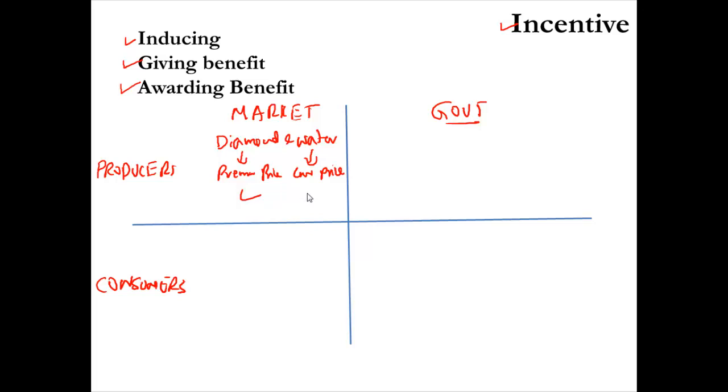The government interferes in this market incentive system by awarding subsidy for water suppliers, say for digging wells and so on, by awarding zero tax so that they can keep all the profit they make, maybe by providing low interest loans. All these actions of the government modify the market incentive system to the extent that water is fully available to the entire society.